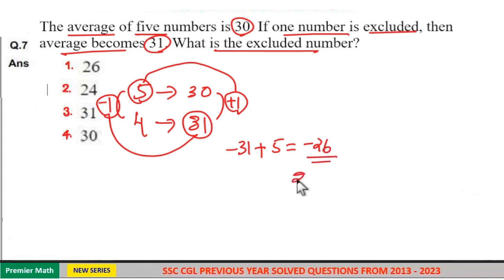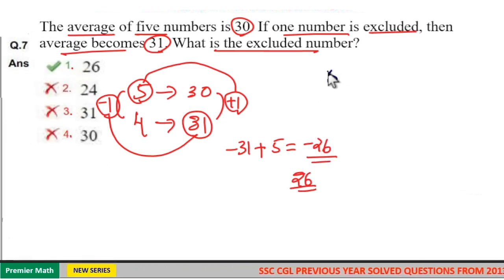So leave the negative symbol and take the remaining, that is 26. Option 1 is your answer. Here for five numbers average is equal to 30, and remaining four numbers average is 31.